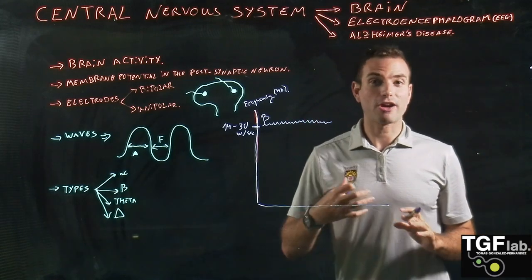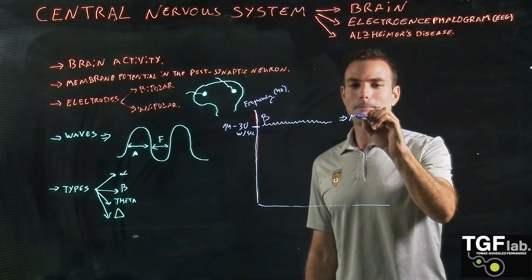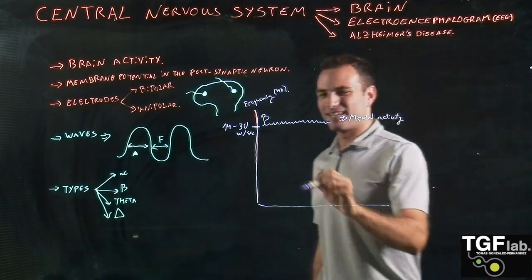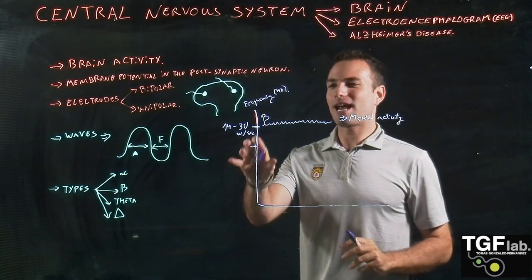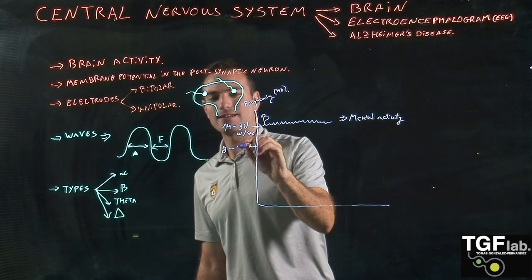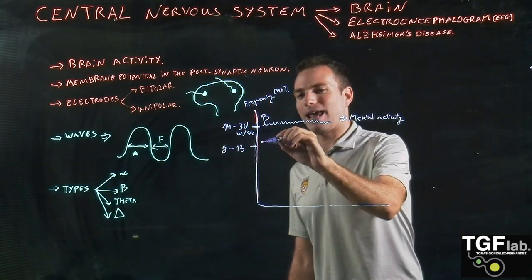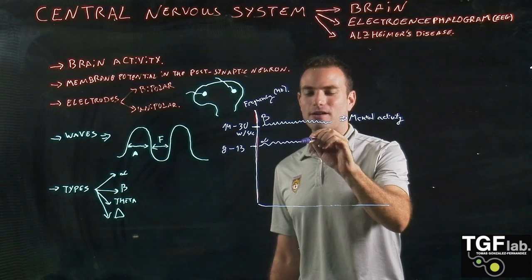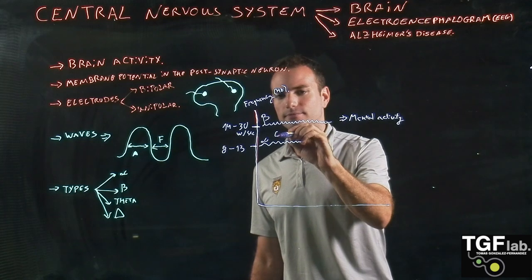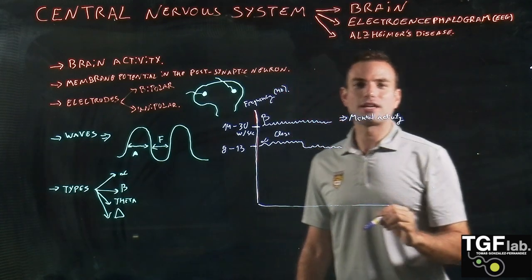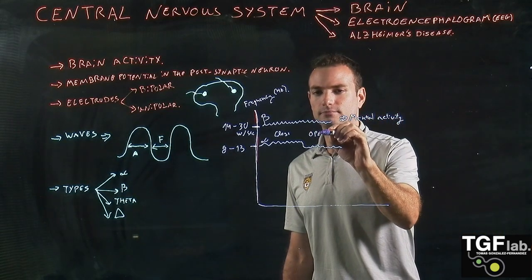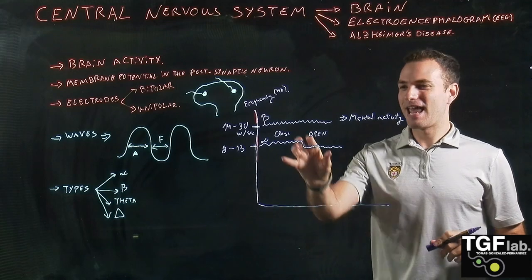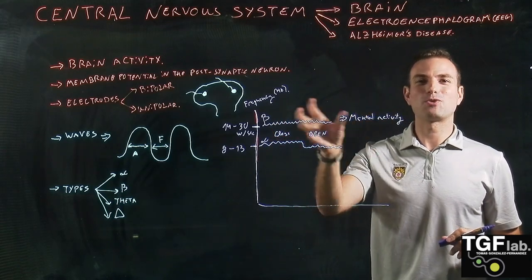Beta waves are very frequent and they are going to indicate mental activity — when we are thinking. The second type of waves, at a frequency of 8 to 13 waves per second, are going to be the alpha waves. The alpha waves have two different sections: one when our eyes are closed and another when our eyes are open. We can close our eyes, measure the waves, and see the difference between eyes closed and eyes open — this is actually one of the hands-on lab practicals in my undergraduate course.